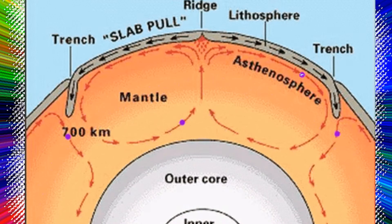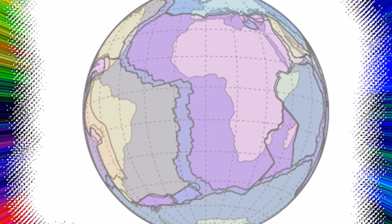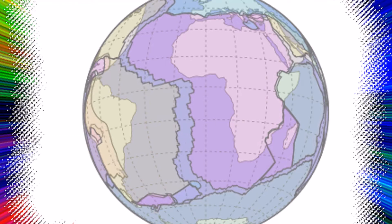During the late 20th and early 21st centuries, it became apparent that plate tectonic processes profoundly influence the composition of Earth's atmosphere and oceans, serve as a prime cause of long-term climate change, and make significant contributions to the chemical and physical environment in which life evolves.